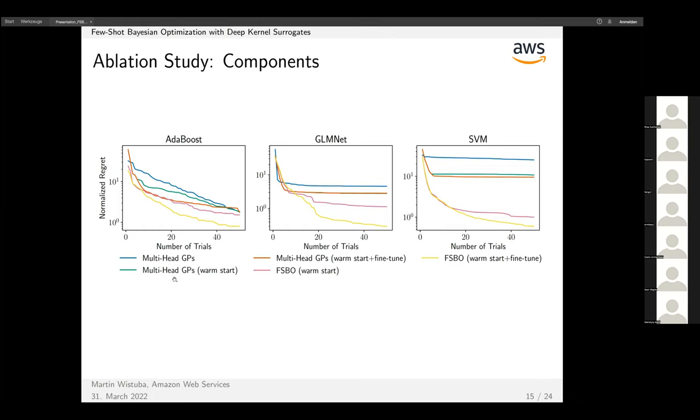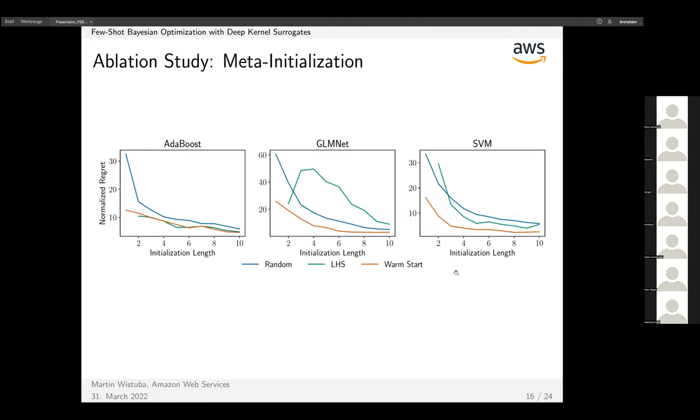We also have fine-tuning, which in some cases improves. FSBO without fine-tuning adds the meta-learning and uses only one GP, so no multiple heads. We see an improvement from green to pink, and similarly for our final method we see improvement from FSBO in pink to this one. All these additions make sense.